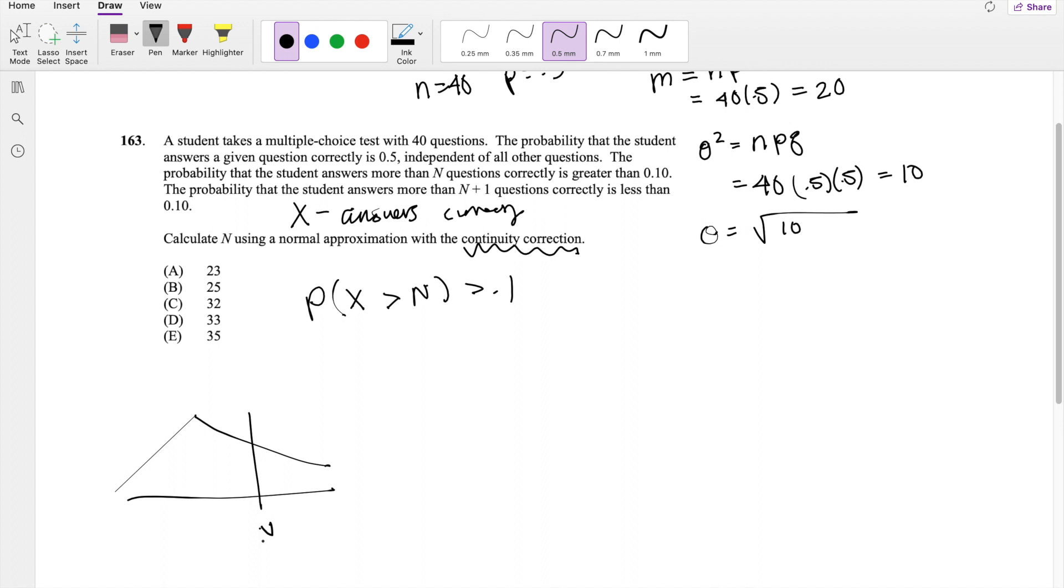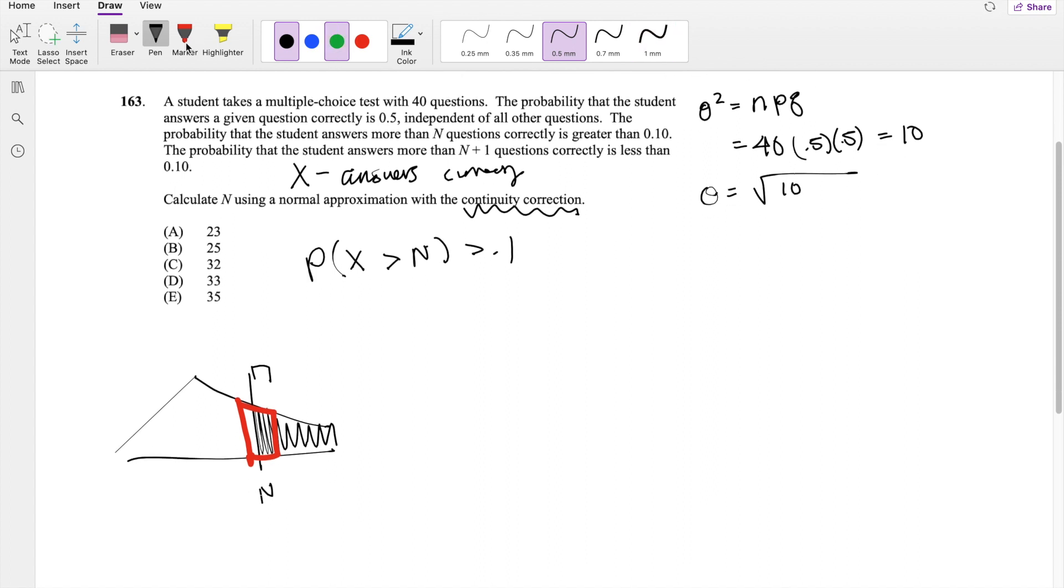So if x is greater than N, where this is N right here, in a continuous case, this is what it's going to look like. But in a discrete case, the N takes on a little bit bigger space. Right, so it's going to look like this. So you notice there's this little gap here that the approximation is not taking into account because if x is greater than N, so not including that number, this is the part that we're looking for.